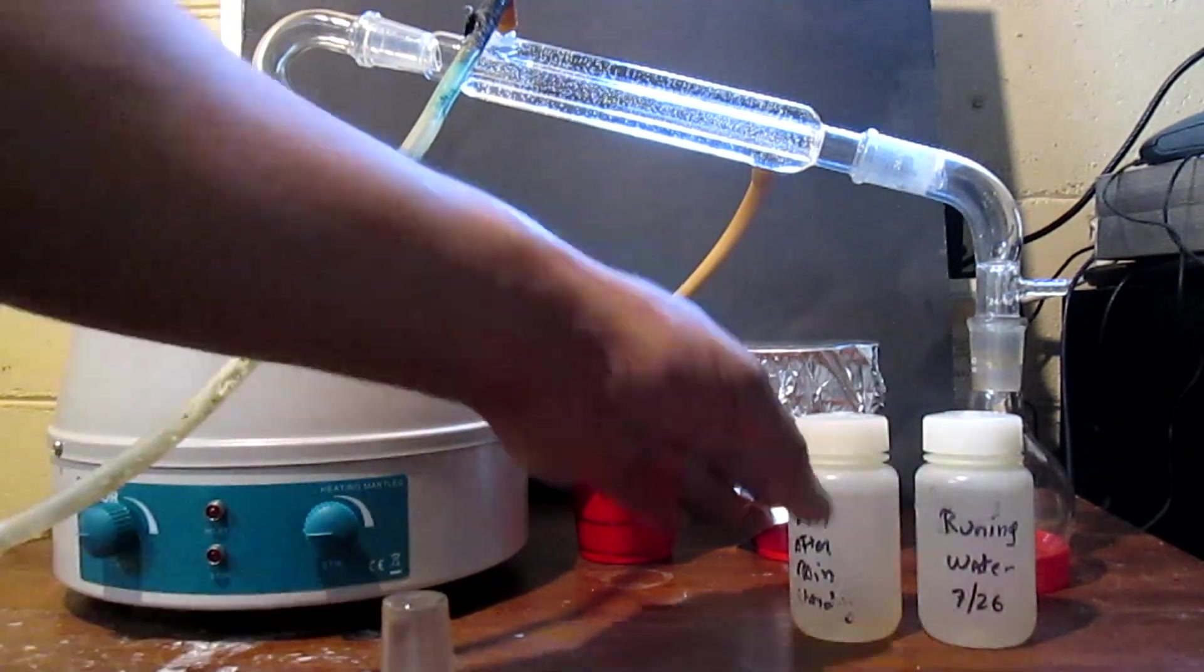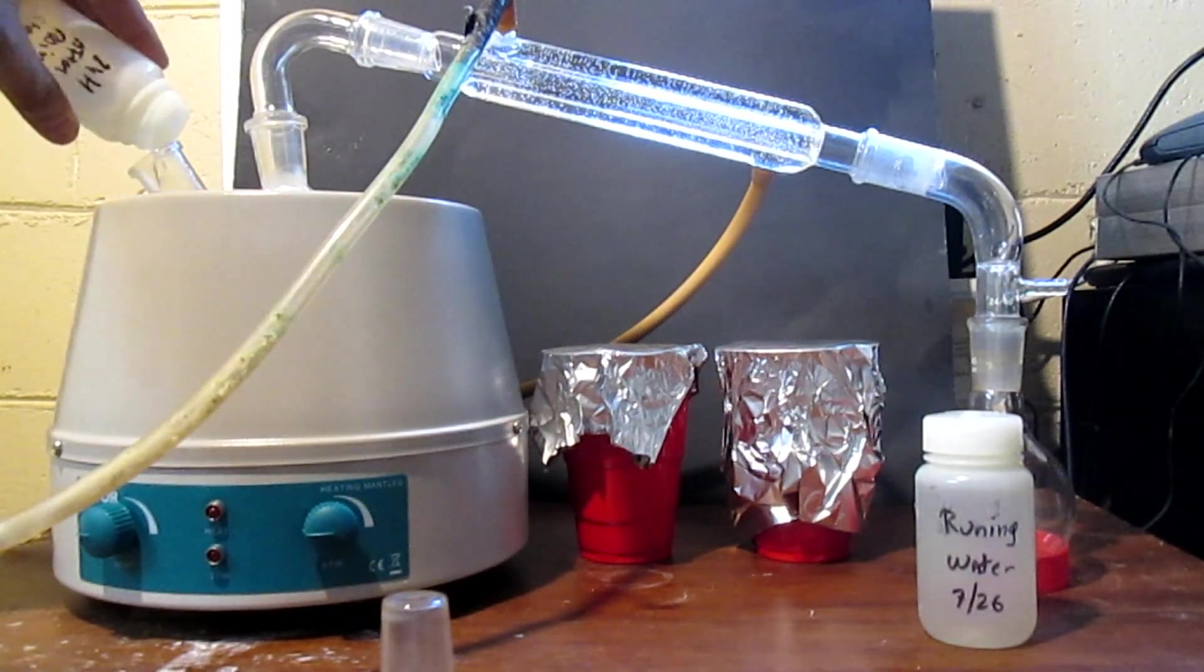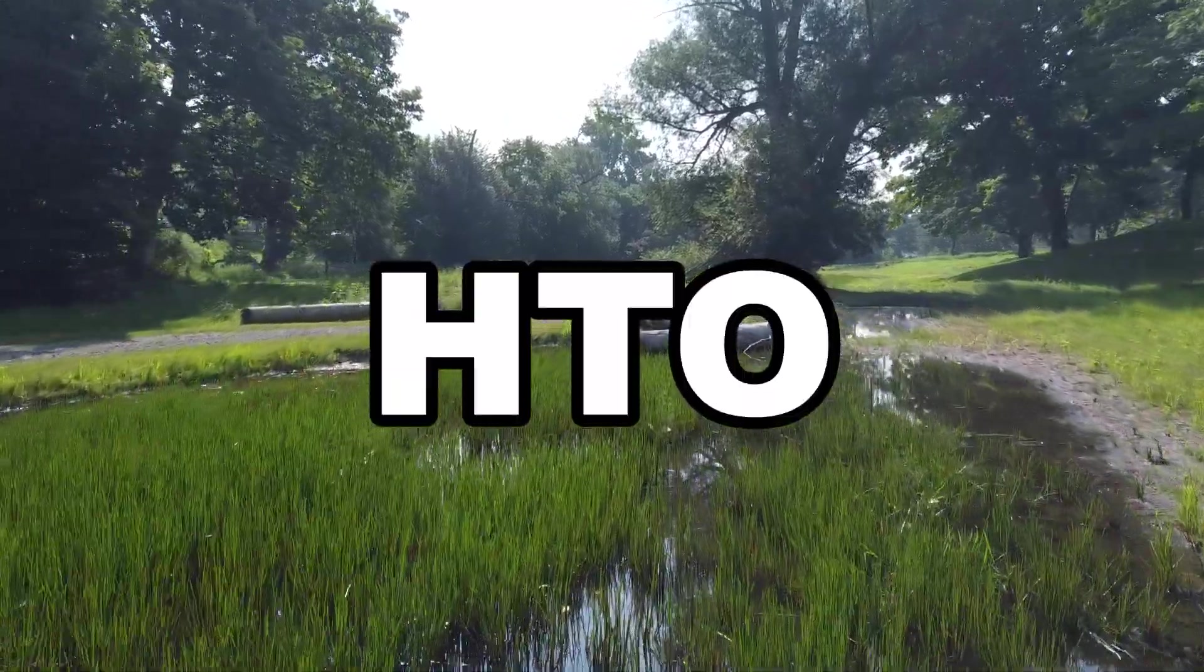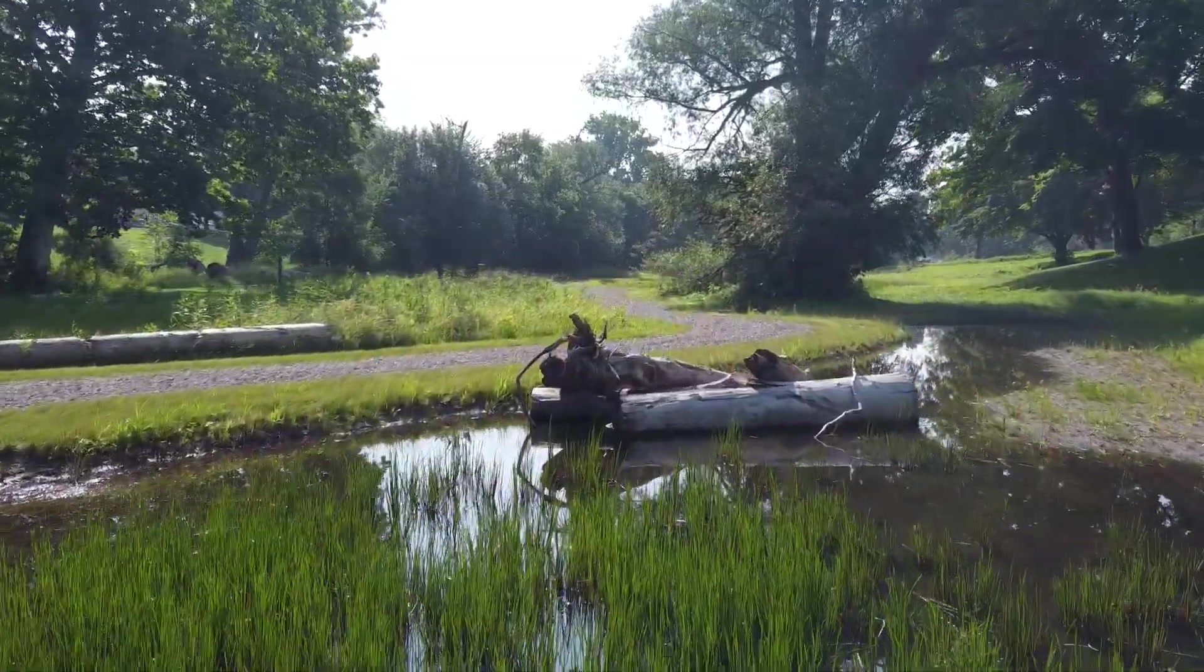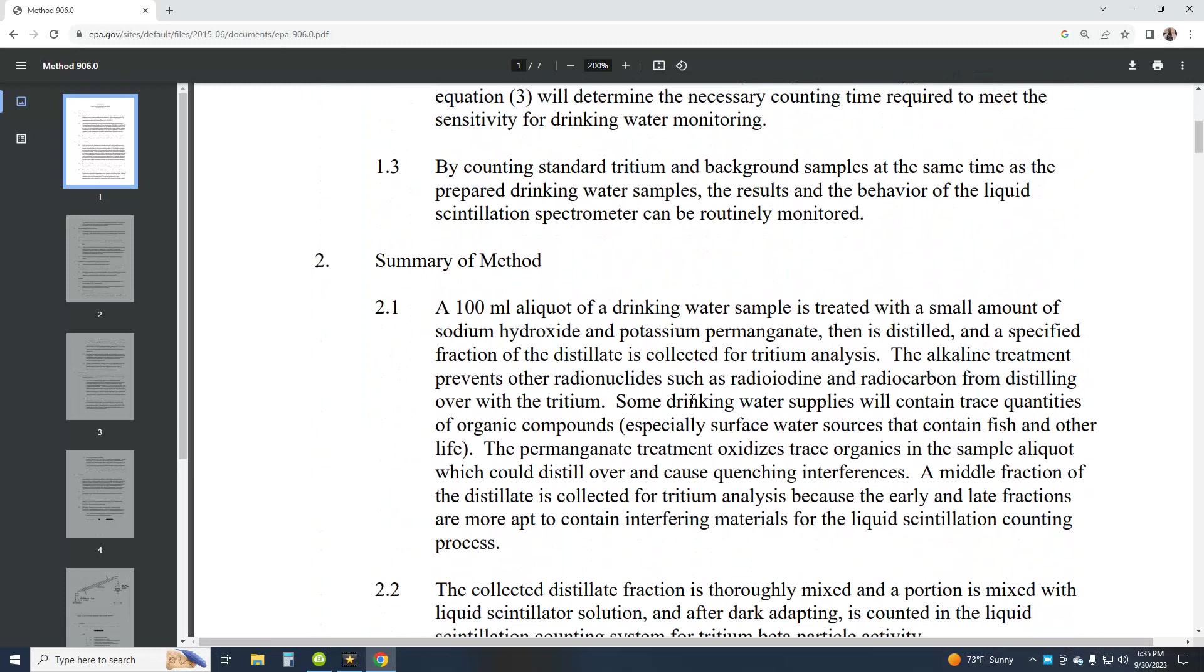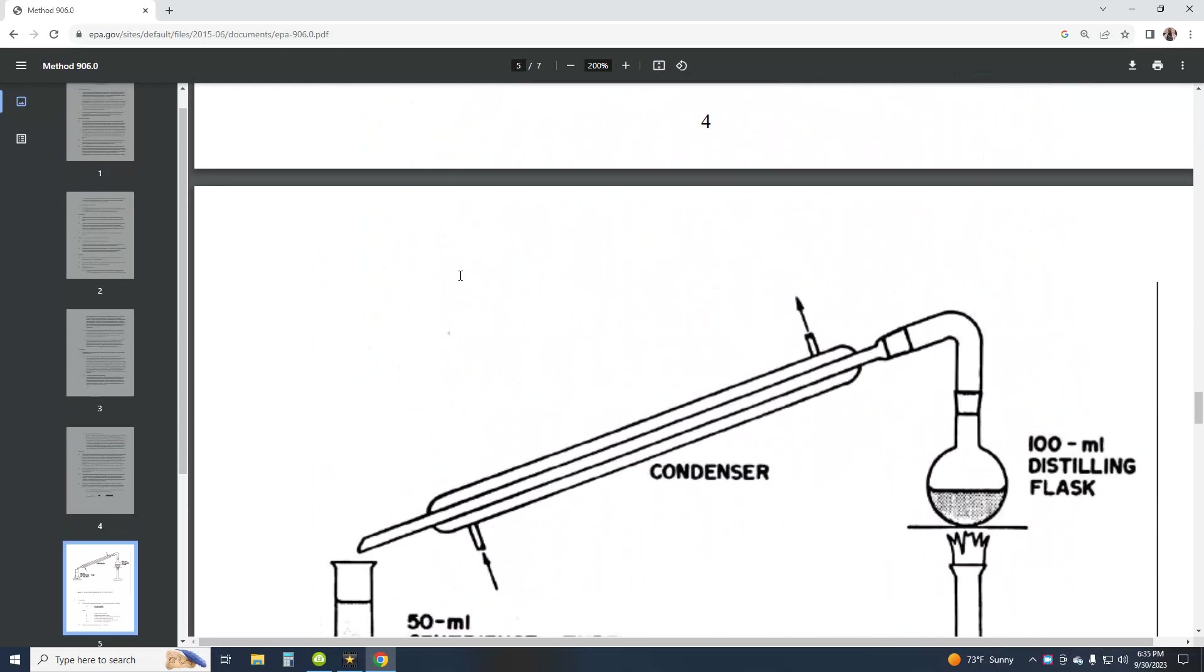Tritiated water in the form of T2O is somewhat concentrated by distillation, but it is unlikely to be found in the environment. The HTO form is far more common. Therefore, distilling the sample is perfectly fine. In fact, the EPA method 906 for Tritium in drinking water recommends distillation to remove potential interference.